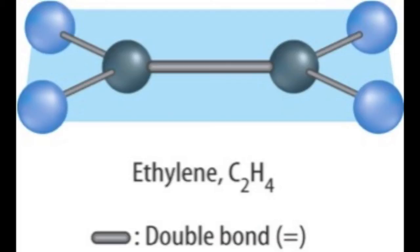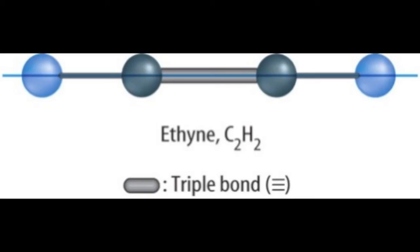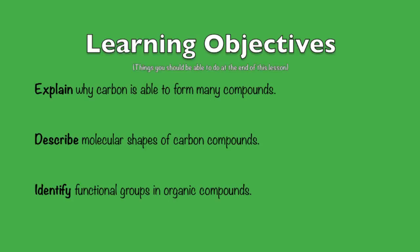The third molecular shape for carbon molecules is called linear. As you might guess, the atoms are all lined up in a straight line. Generally, when you see a linear molecule it contains a triple bond, as shown here.